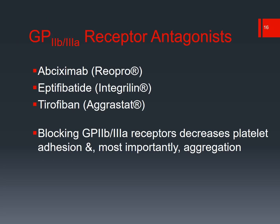Here is a list of our GP2B3A receptor antagonists — these are blocking aggregation of the platelets. We have three in class: Abciximab (ReoPro), Eptifibatide (Integrilin), and Tirofiban (Aggrastat). These are all IV formulations, and Dr. Bakta will go into great detail on when and how these are used in the therapeutics.